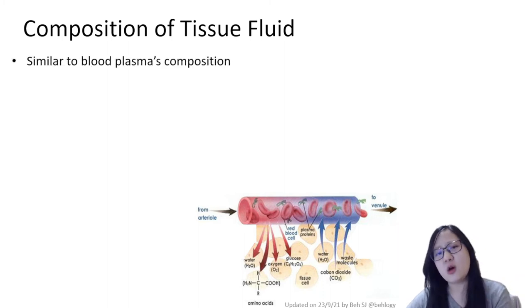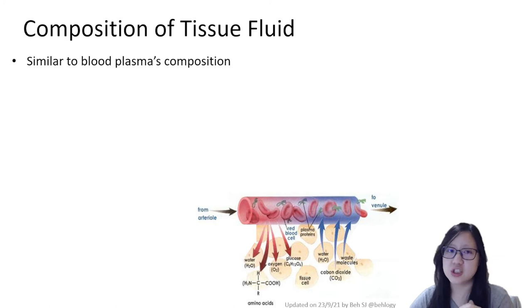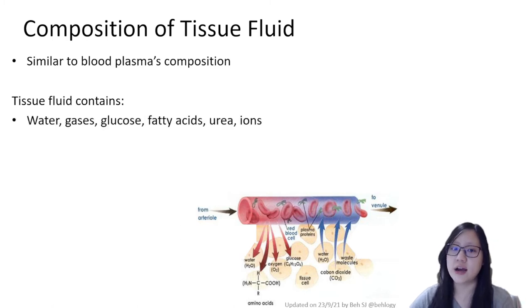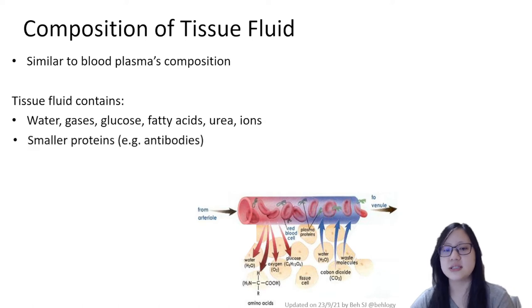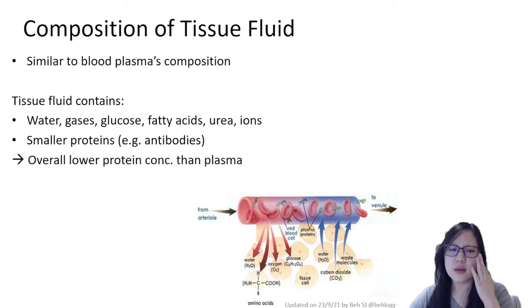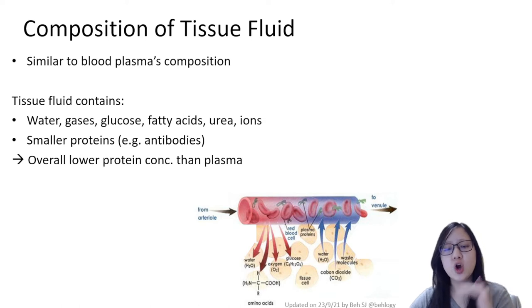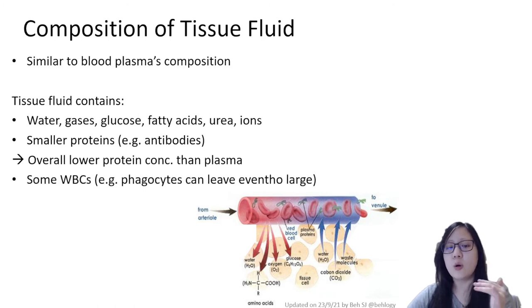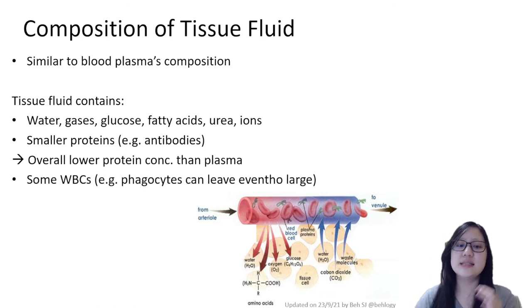Although tissue fluid composition is generally quite similar to blood plasma, there are some exceptions. Tissue fluid contains water, gases, glucose, fatty acids, ions — all things also present in blood plasma. However, it has only smaller proteins such as antibodies and no large proteins. It has an overall lower protein concentration than plasma because the large proteins cannot exit the vessels — they stay in the blood plasma. Tissue fluid also contains some white blood cells.